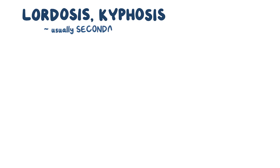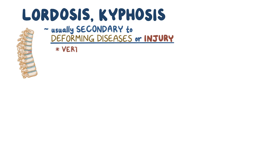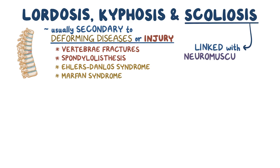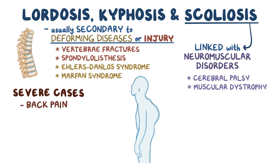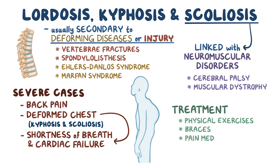As a quick recap: lordosis and kyphosis are usually secondary to diseases or injuries which deform the vertebrae and ligaments, such as vertebral fractures, spondylolisthesis, Ehlers-Danlos syndrome, and Marfan syndrome. Scoliosis is linked with some neuromuscular disorders like cerebral palsy or muscular dystrophy. In severe cases, lordosis, kyphosis, and scoliosis can cause back pain. Kyphosis and scoliosis may deform the chest, resulting in shortness of breath and cardiac failure. Treatment usually involves physical exercises, braces, and pain medication, or surgery in severe cases.